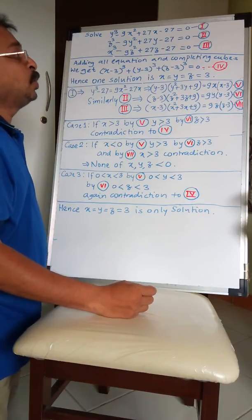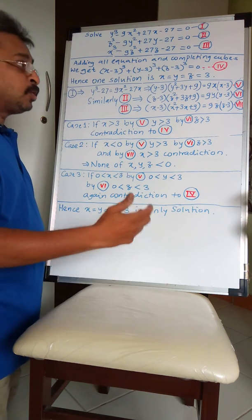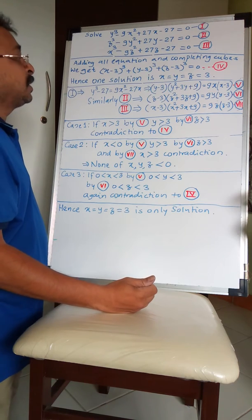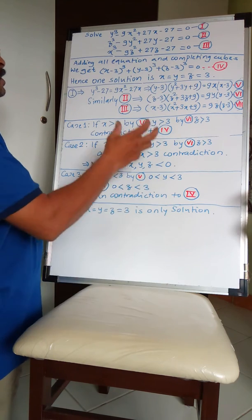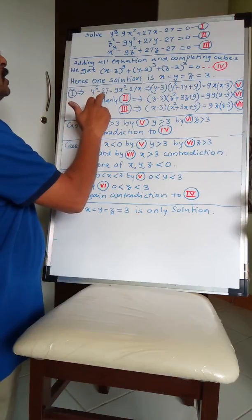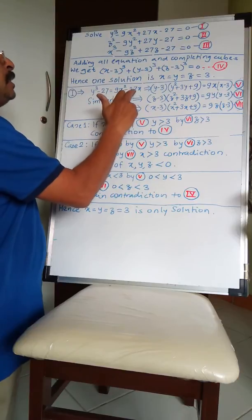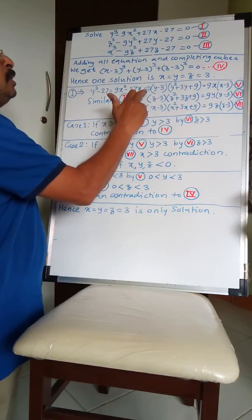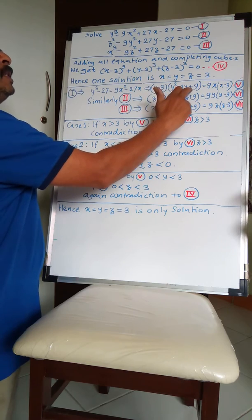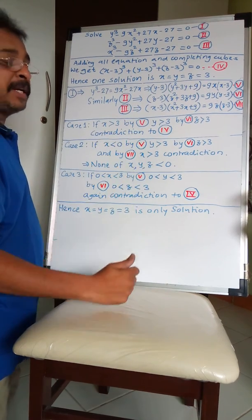Now we need to find out whether there are more solutions available to this system of equations, so we consider cases. First, let us rewrite the equations. For example, y³ - 27 = 9x² - 27x, which implies (y - 3)(y² + 3y + 9) = 9x(x - 3). This is simple factorization.